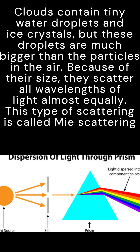But these droplets are much bigger than the particles in the air. Because of their size, they scatter all wavelengths of light almost equally. This type of scattering is called Mie Scattering.